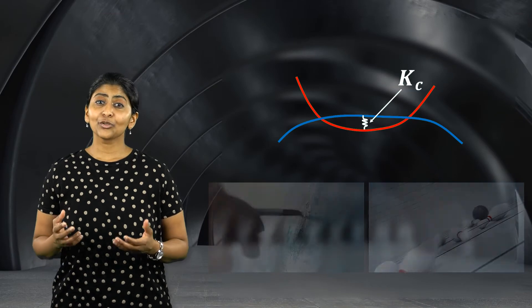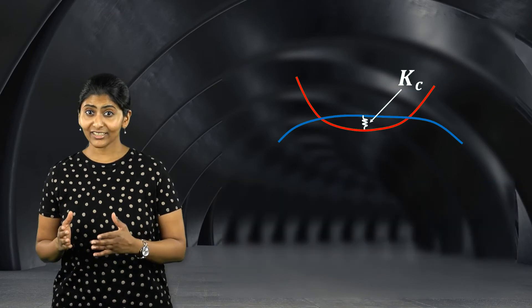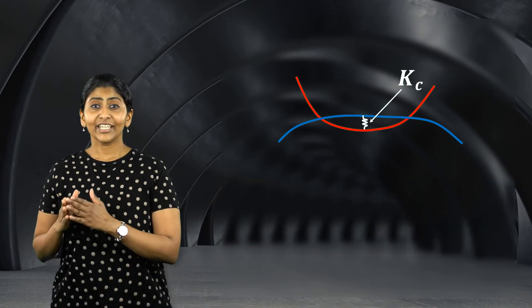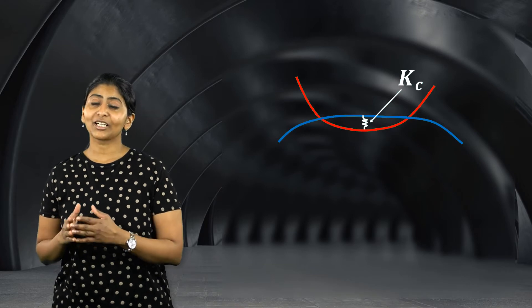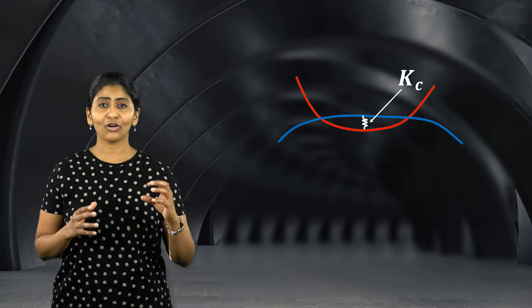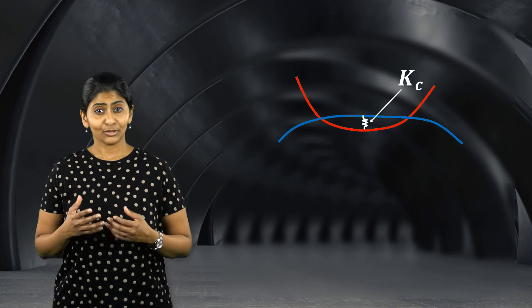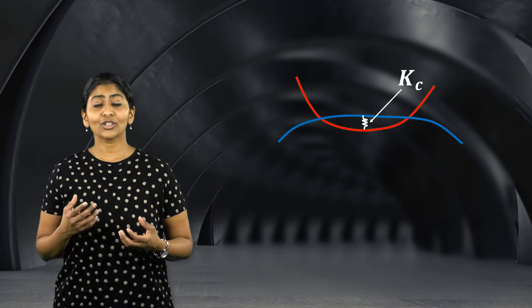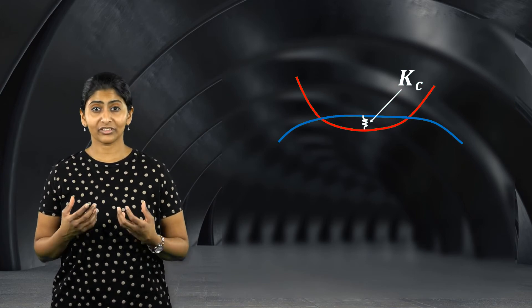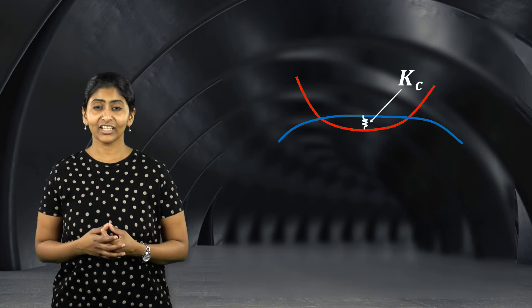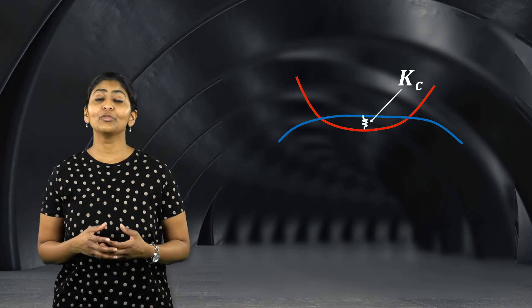Similarly, if the two mating parts are shells made of steel, they will be more deformable as compared to two thick blocks made of steel. So in this case, although the contacting parts are made of steel in both the cases, the contact stiffness will be smaller in the first case.